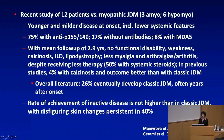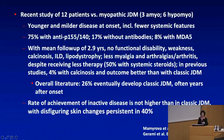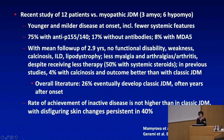In previous studies, 4% had calcinosis with an outcome better than in classical JDM. Overall, about 26% eventually developed classic JDM, often years after onset. So these patients, even if they present amyopathic or hypomyopathic, need to be followed regularly. Interestingly, in this recent study, the rate of achievement of inactive disease was not higher than in classic JDM, with disfiguring skin changes still persistent in 40%.